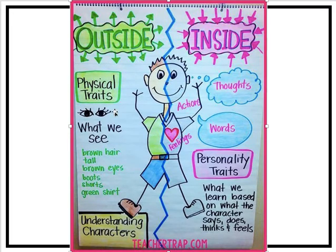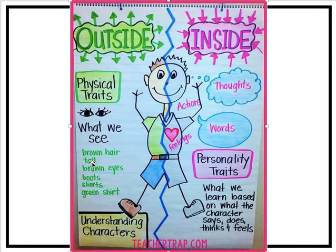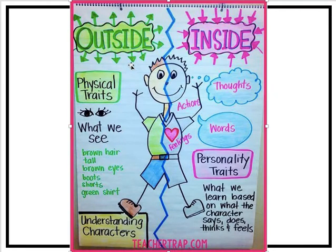We can see the outside things — outside character traits. We might talk about their hair, how tall or short they are, how young or old they are, what their eyes look like, what they're wearing. That's the outside.